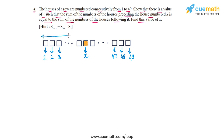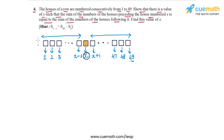If you take all the houses before house x and add their numbers, those houses go from 1 up to x minus 1. Then if we take all the houses after x, starting from x plus 1 up to house number 49, and take their sum, these two sums should be equal. So we have to show that such a value of x exists and find that number.